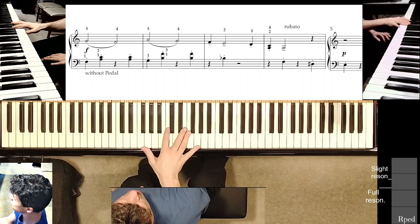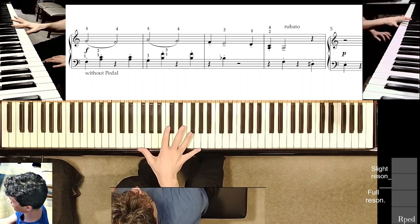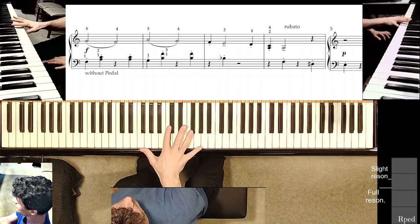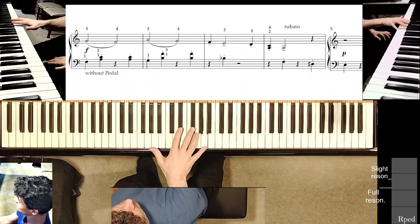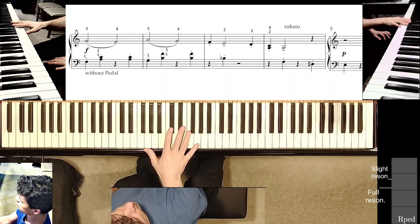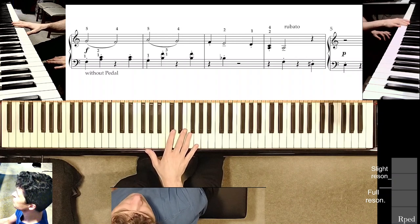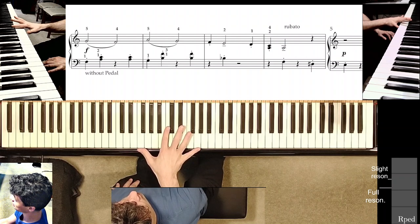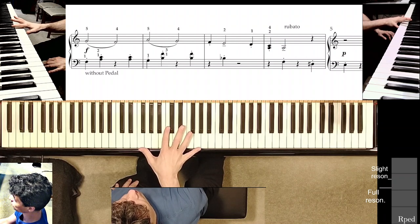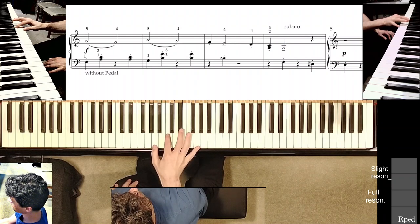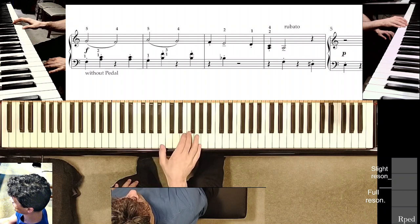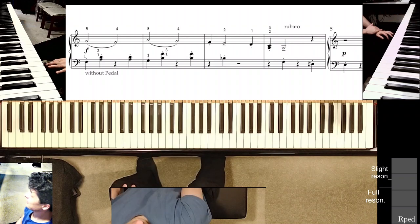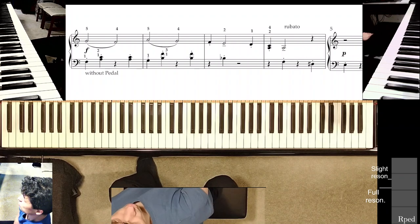All right, so in this second study the trick is to play a legato melody in fingers five, four, maybe three, and maintain an articulated staccato bass line, something like that, and have to do it together.